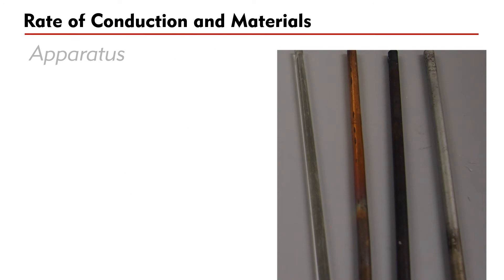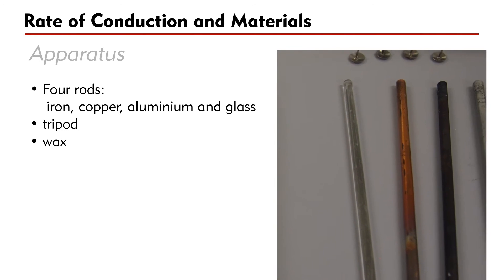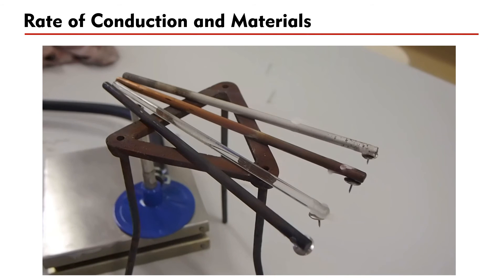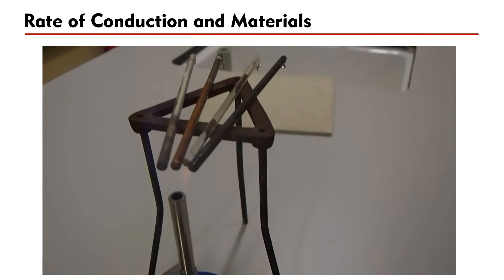The following experiment is designed to study how the rate of heat conduction varies with materials. The apparatus includes four rods of the same dimension but different materials: iron, copper, aluminum, and glass. It also includes a tripod, wax, joint pins, and a Bunsen burner.